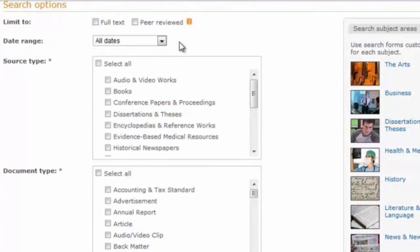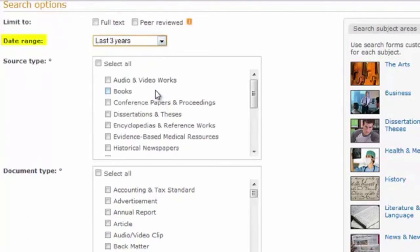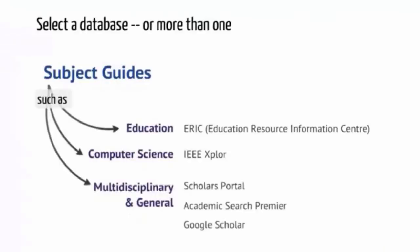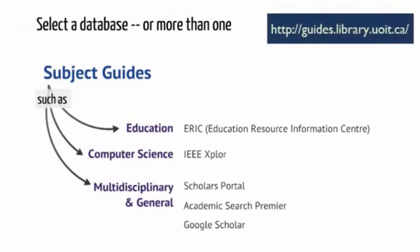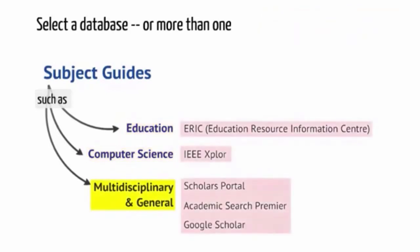Databases have many search options. For example, you can search for more current articles. You can also search for articles in peer-reviewed journals only. The library provides access to hundreds of databases. How do you know which one to choose? The library has developed subject guides to recommend resources for different subjects, programs, and courses. Choose the subject guide that's relevant to your topic — for example, you might choose education, computer science, or multidisciplinary and general. Here are some examples of databases listed on those guides. You may need to use more than one database to find all of the articles you need.